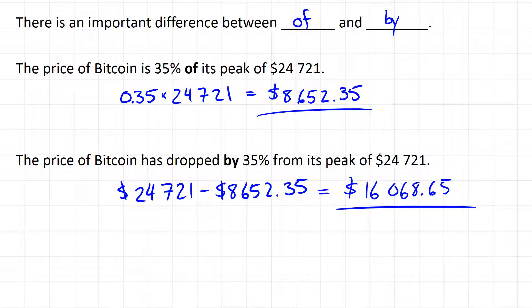So you see that's a big difference. If it drops to 35% of its original, it's just straight multiplication by the decimal. But if it's dropped by some percentage, then you're going to have to subtract that bit off.